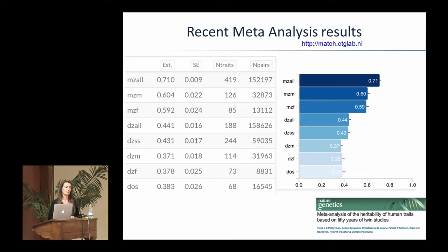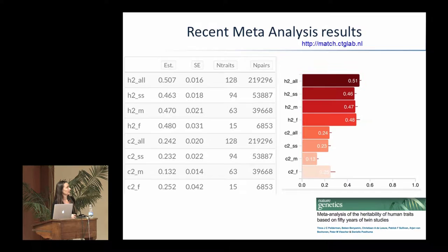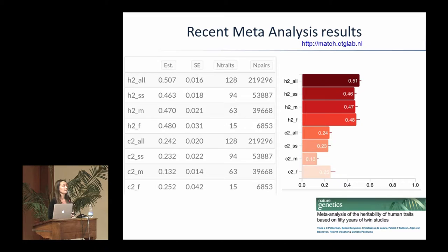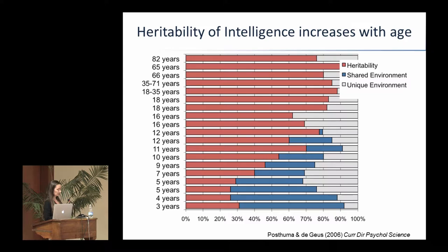The monozygotic twin correlation is 0.71, and the dizygotic twin correlation is 0.44. This is across all countries, all different age groups, every study conducted in the last century. Translating this to the relative influence of genes and environment: 50% is due to heritability — so 50% of the variance in that normal distribution can be explained by differences between people in their genes. The other 50% is due to the environment, split into 24% shared environment and the remainder non-shared environment.